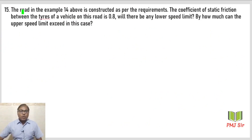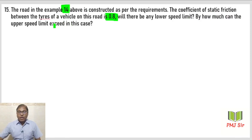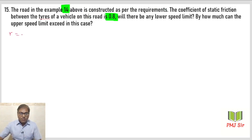Ab question number 15 dekhte hain, jo question 14 ka continuation hai. The road in Example 14 is constructed as per the requirement. The coefficient of static friction between the tires and the road is mu_s = 0.8. Will there be any lower speed limit? By how much can the upper speed limit exceed? Toh v_minimum aur v_maximum dhoondna hai. Data: radius r = 72 meters, mu_s = 0.8.